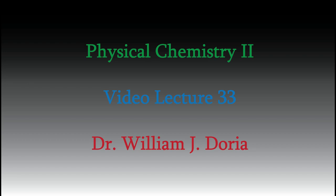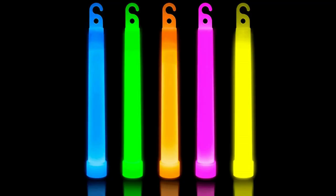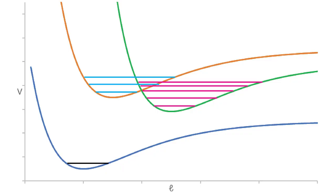Hi, and welcome back to my series of videos for Physical Chemistry 2. For the past few videos, we've looked at the interactions between light and matter and how these are detected during an experiment in absorption or emission spectroscopy. In the last video, we looked at the phenomenon of phosphorescence, and we saw that electronic states can have different multiplicities — for example, a singlet state and a triplet state, which are two different multiplicities. What exactly does that mean? That's what I want to talk about in today's video.